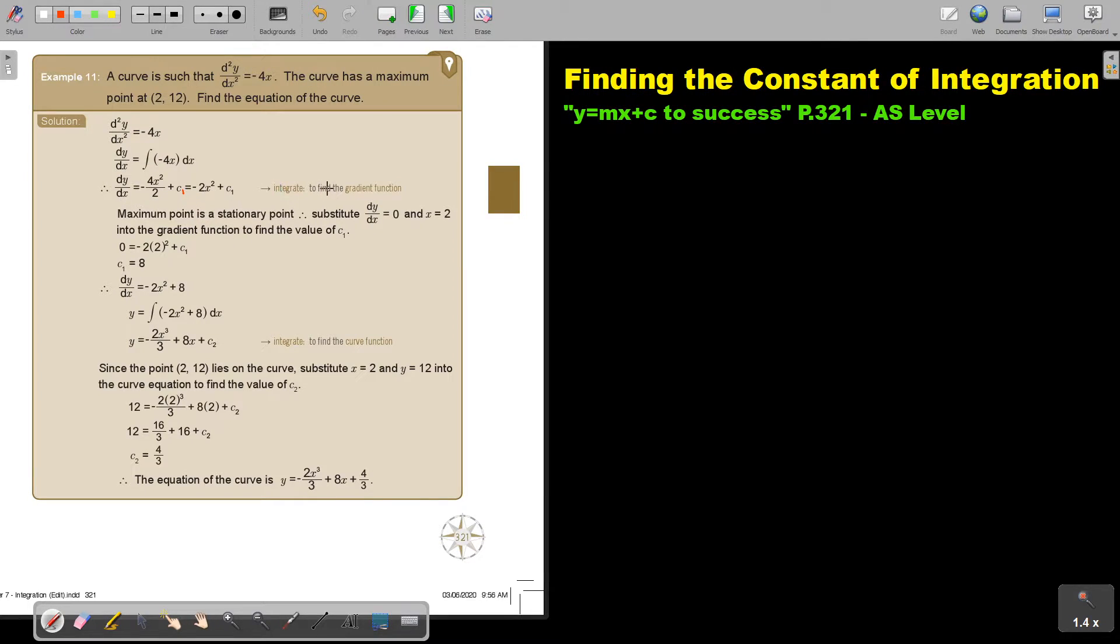After I integrate this, for the maximum point is a stationary point, you must always remember that dy by dx was 0. So I will substitute 0, and then the value of x was 2, and then I find my first c1.